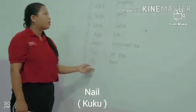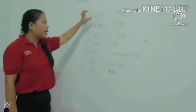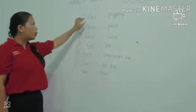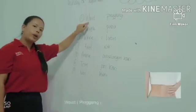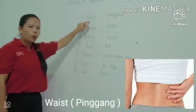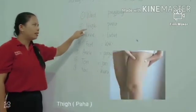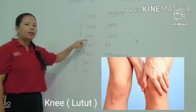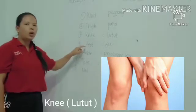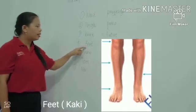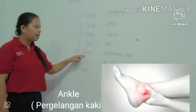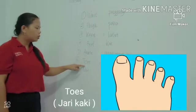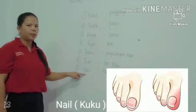Okay, we want to repeat again. Follow after me, from number one to number seven. Waist. Thigh. Knee, knee. Feet, feet. Ankle. Toes, toes. Nail, nail.